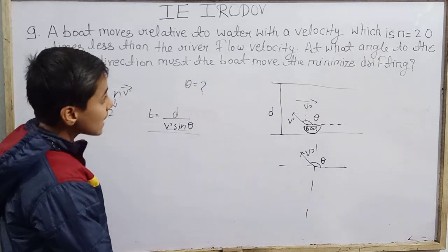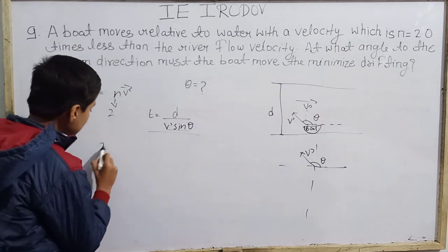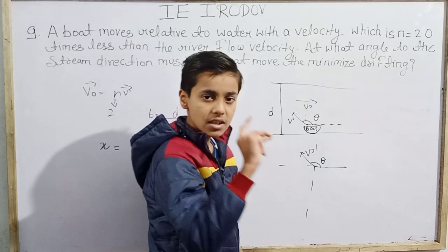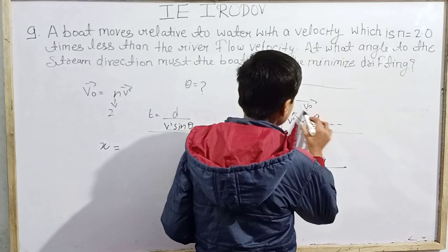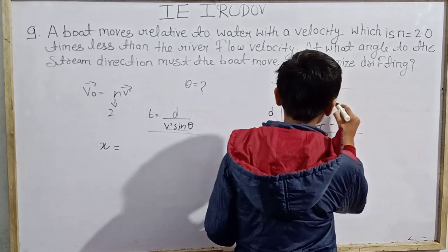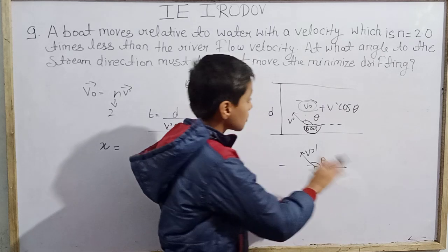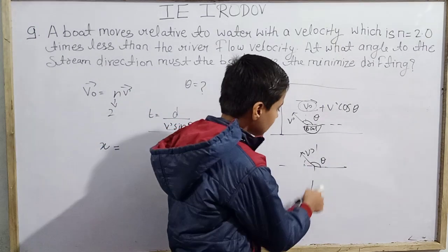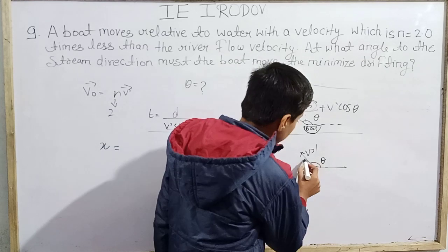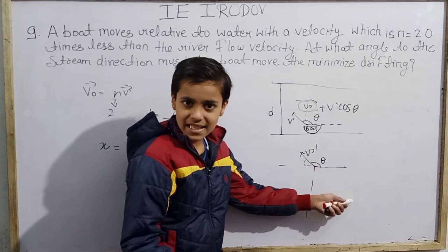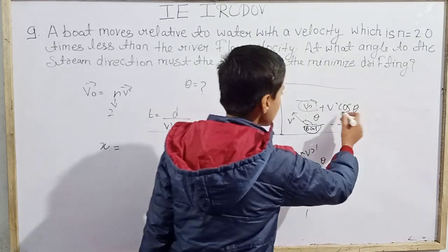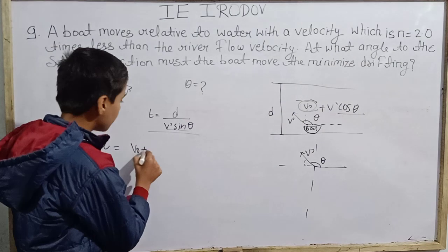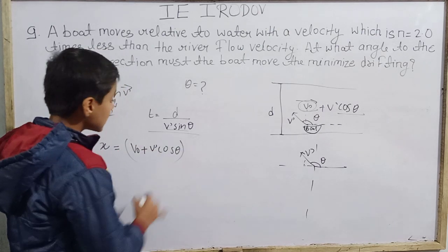Drifting is a horizontal displacement, so we use horizontal velocity multiplied by time. The horizontal velocity has two components: the river flow velocity V₀ and the horizontal component of the boat's relative velocity, which is V' cos theta. So the total horizontal velocity is V₀ plus V' cos theta.